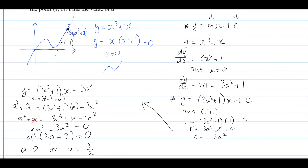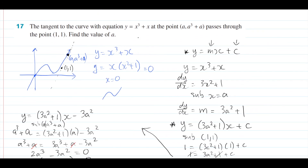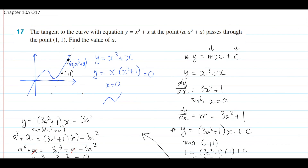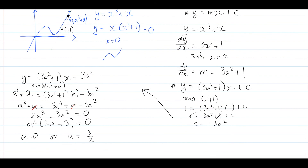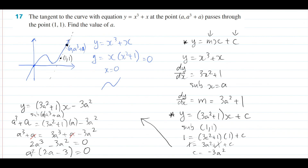The last thing I normally check is whether a equals 0 and a equals 3/2 are both valid. In our question there's no restriction on a - a can be any point on the graph. The point (0, 0) does exist on this graph, so a equals 0 is valid. And a equals 3/2 - there's no restriction, so that's valid too. So the final answer is a equals 0 or a equals 3 over 2. I hope you found this video useful and insightful. If you have any questions please leave a comment below, and please leave a like and subscribe to the channel. Thank you very much for watching and I'll see you in the next video.